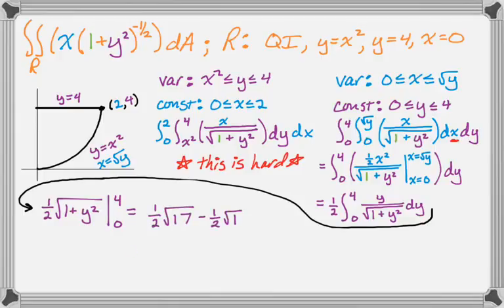So when you plug in 4, you get √17. When you plug in 1, you get 1. So our final answer is (√17 - 1)/2. We could have gotten it doing it the other way, but the other way is a very hard integral, and this way is not a very hard integral. So that's a case where you'd want to choose one order over the other.